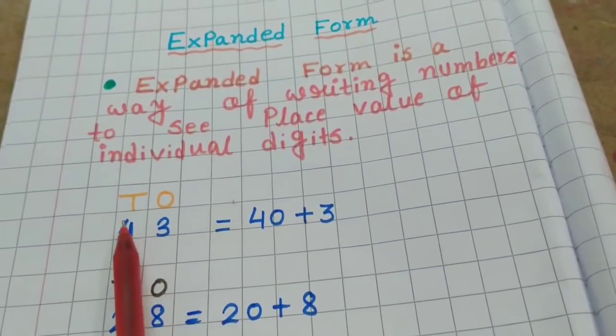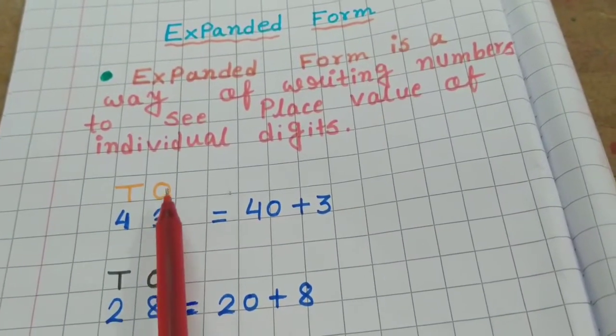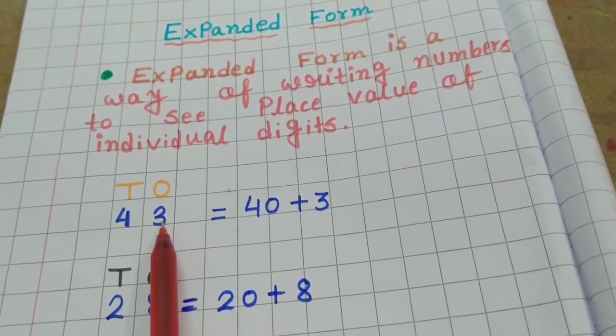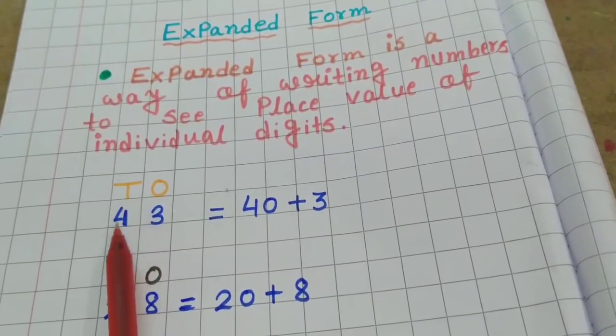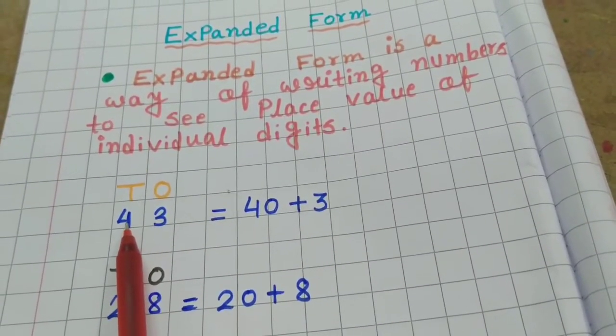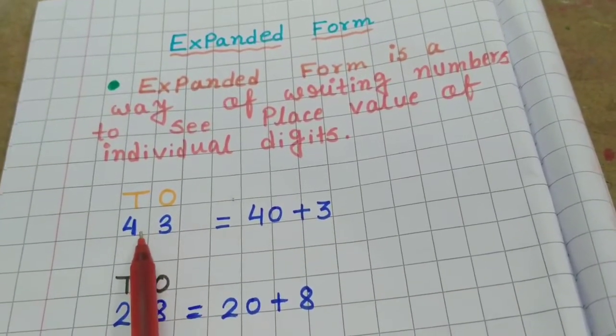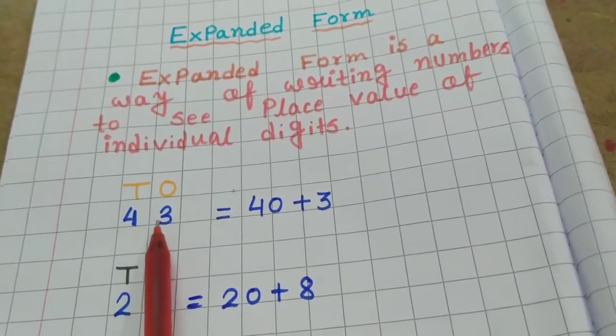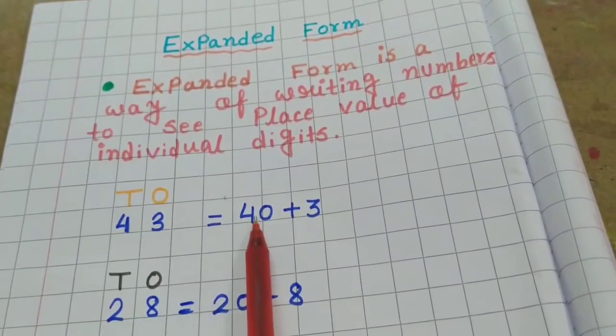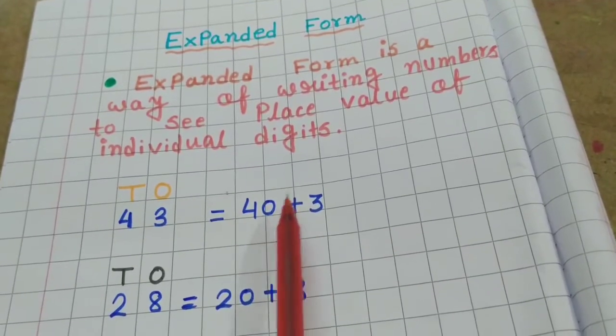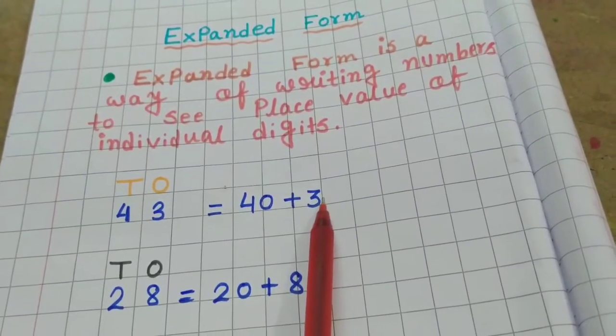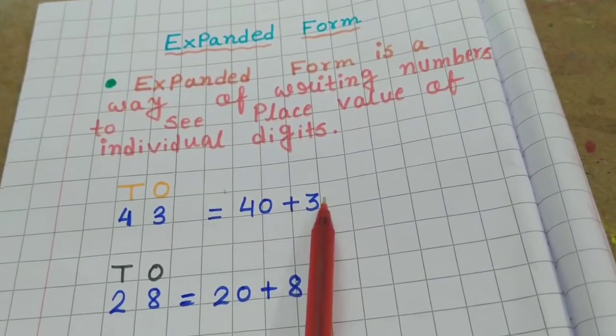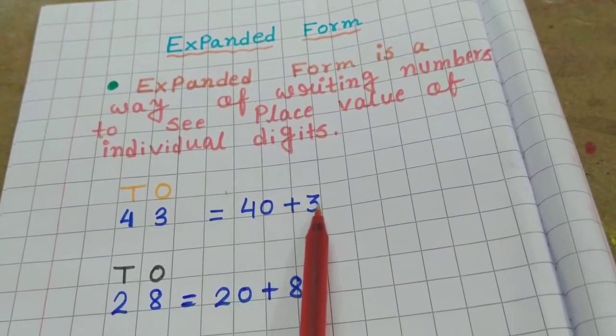Place value means here you can see I have written 1s and 10s and under 1s I have written 3 and under the 10s I have written 4. So, 43 means 40 plus 3. Here you can see the place value of individual digit.